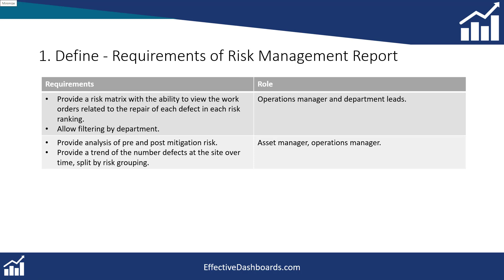The next screen will provide the ability to review the list of work orders. We need to drill into the detail and see the work orders, and understand which work orders are in each risk area when we click on the matrix. We also want to filter by department so supervisors can see the work they're responsible for, understand how it fits into the schedule, see if any of it is overdue, and build a schedule to go and repair these defective pieces of equipment.